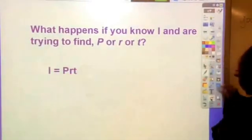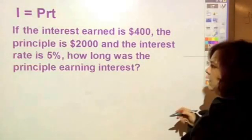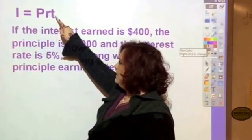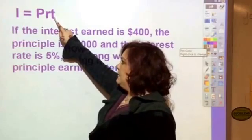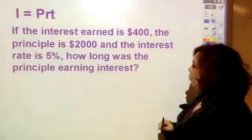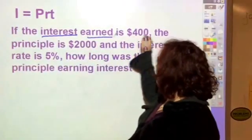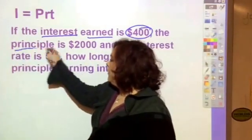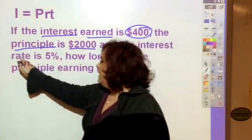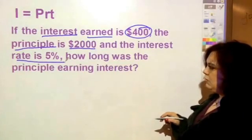Let me show you an example. The interest earned equals the principal times the rate as a decimal times the time. If the interest earned is $400, the principal is $2000, and the interest rate is 5%, how long was the principle earning interest?